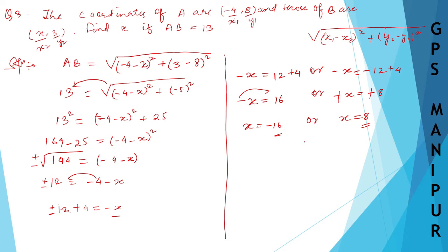I hope this is the answer, but the book has given a different answer — I think they are giving minus 8. Please check if I have made any mistakes and let me know in the comments below. So therefore x is equal to minus 16 or 8. Thank you so much, we will meet in the next video.